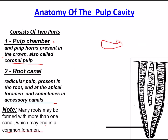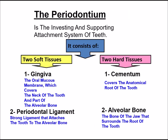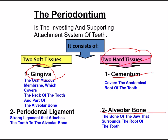The periodontium consists of two soft tissues: first, gingiva — the oral mucosal membrane covering the neck of the tooth and part of the alveolar bone; second, the periodontal ligament — a strong ligament attaching the tooth to the alveolar bone. The two hard tissues are cementum, covering the anatomical root, and alveolar bone — the bone of the jaw surrounding the root.